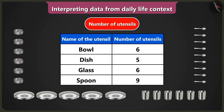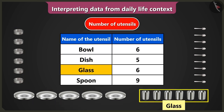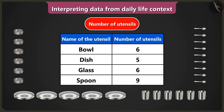The data about utensils we have is given in this table. The data about names of the utensils is given in the first column and the data about the number of utensils is given in the second column of the table. Names of utensils — bowl, dish, glass and spoon — are written here. So the data about four kinds of utensils is given.